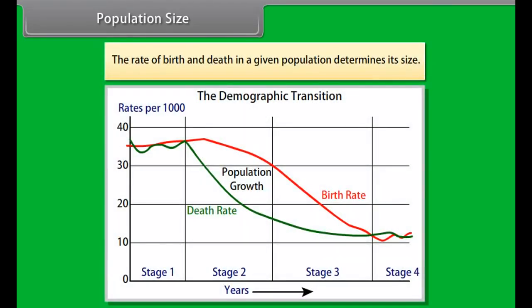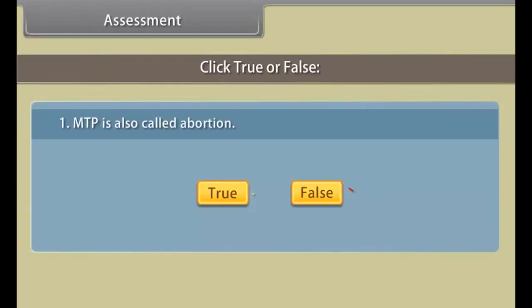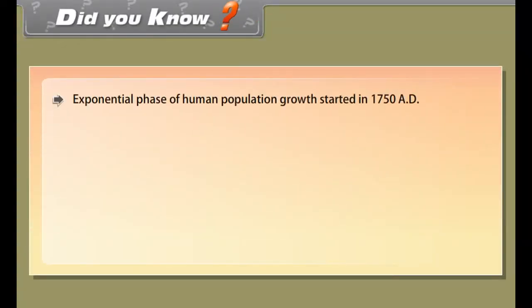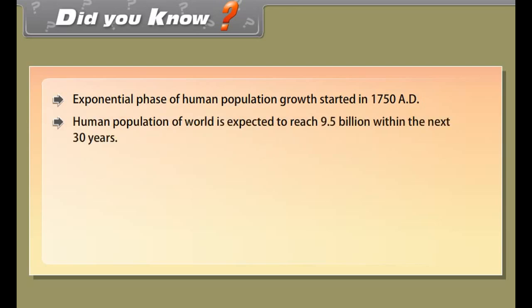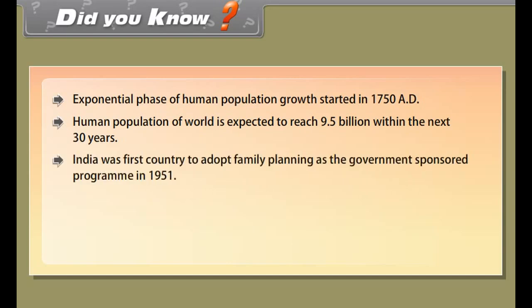Sex ratio is the ratio of the number of females to the number of males in a population. The female-to-male ratio must be maintained for a healthy society. The female-child sex ratio is declining at an alarming rate in some sections of our society because of reckless female feticide. Therefore, prenatal sex determination has been prohibited by law.